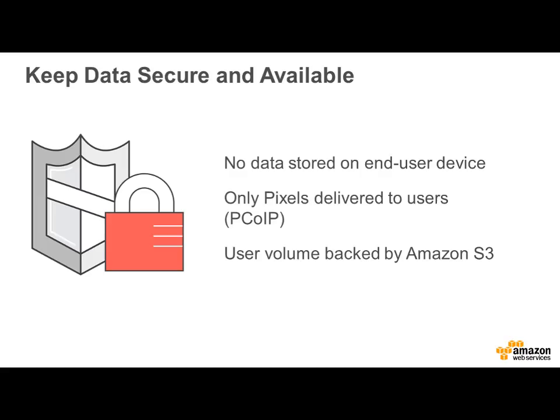Another huge advantage — and this is my personal favorite — is keeping data secure and available. Let's say you are doing fundraising and you are using Amazon WorkSpaces through a PC, a Mac, a Kindle, an iPad, or even an Android tablet, and somebody grabs that machine. If you are not using a virtual desktop, that individual has stolen the hard drive housing data you don't want anybody to have — credit card information, PHI, personal health information. But with Amazon WorkSpaces, no data is stored on the end user's device. The only data transferred over the Internet is the pixel using PCoIP, and the user volumes are backed by Amazon S3 — our simple storage service.